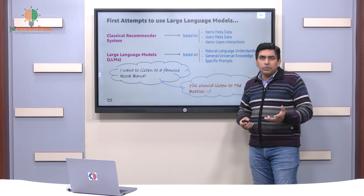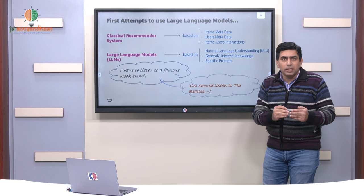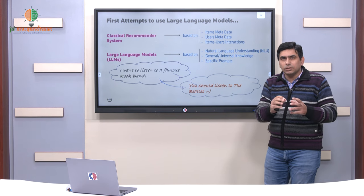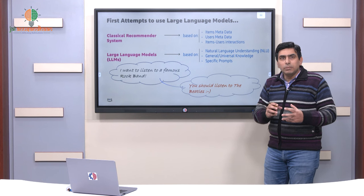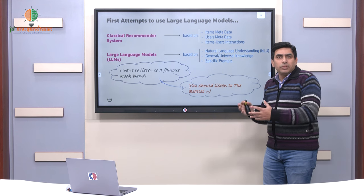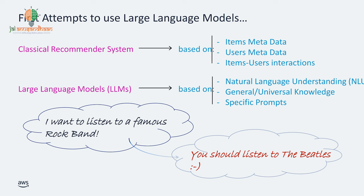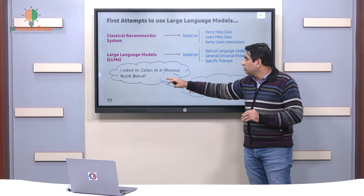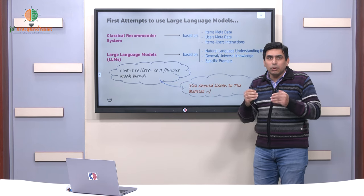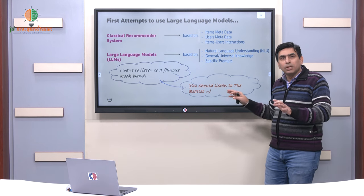In the classical recommender system, there is item data, user data, and interaction data — all put together, then a decision is taken. But when we talk about Gen AI, the large language models or foundation models — these are terms you will hear very commonly. These are machine learning models which take large input, process it fast, and give output. These large language models can help provide an interactive recommendation system. For example, if someone wants to say they want to listen to a famous rock band, that is good enough immediate information, and then you can immediately recommend. This is just a very high-level idea of how Gen AI can impact personalized recommendations.